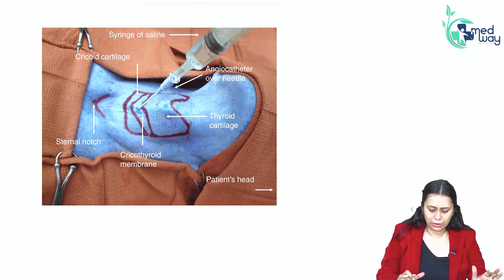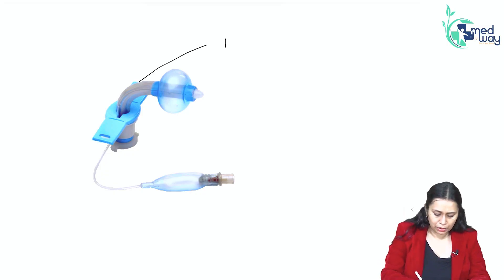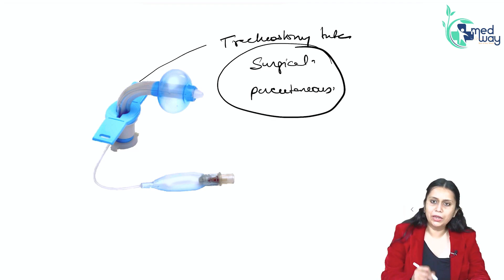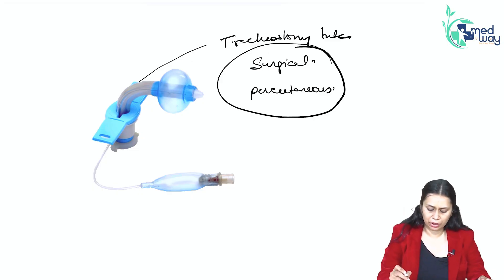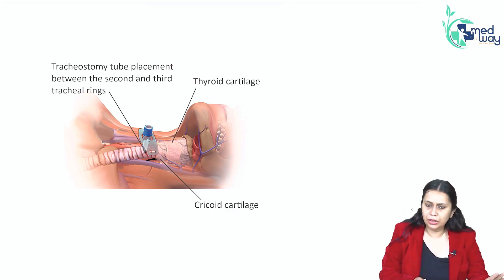Tracheostomy can be done surgically or it can be done percutaneously. A tracheostomy tube is inserted — we can do surgical tracheostomy or percutaneous tracheostomy. For tracheostomy, we have to insert the tube between the second and third tracheal ring.